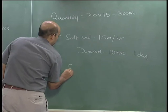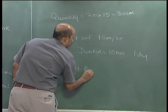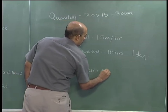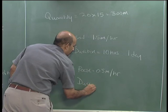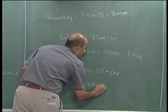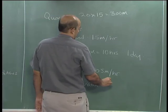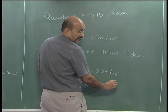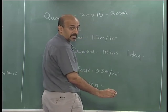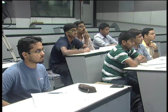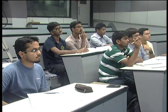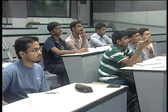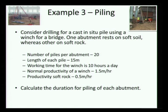For soft rock, the productivity is 0.5 meters per hour, which brings the duration to around 60 days. There are 20 piles on each abutment — so there will be two different timings. Duration for the soft soil side is 20 days, and duration for soft rock, working 10 hours a day, is 60 days.